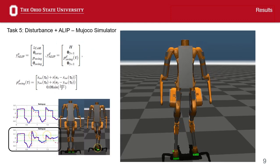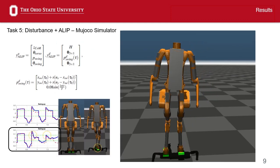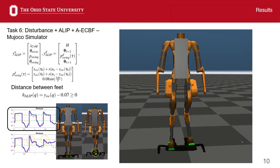In task 5, we test control safety by exerting a 30 newtons lateral force on the robot during walking in place, resulting in gait failure.